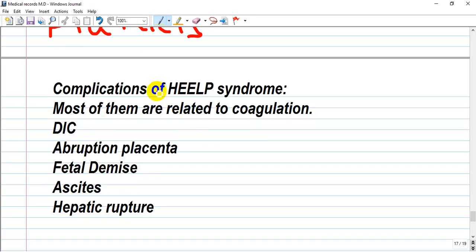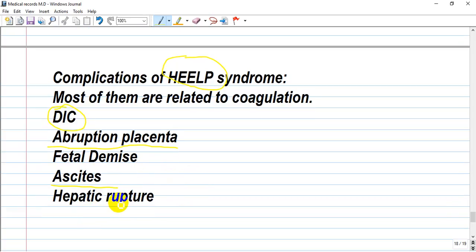Complications of HELLP syndrome - most of them are related to coagulation: DIC, abruption placenta, fetal demise, ascites and hepatic rupture. DIC is associated - DIC occurs in normal patients; if patient is pregnant, it is called HELLP syndrome. Abrupted placenta also causes acute hemorrhage and consuming of coagulation factors and thrombocytes. Fetal demise also eliminates thromboplastin, and ascites is from a deficiency - it's like cirrhosis and deficiency of antithrombin 3 and many coagulation factors. And hepatic rupture - it's like liver failure.